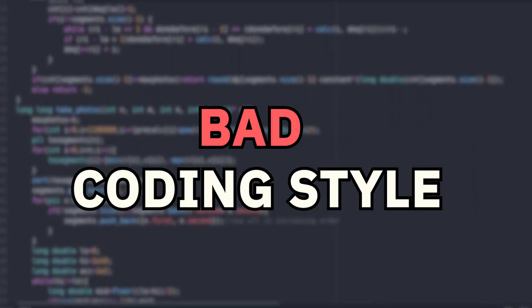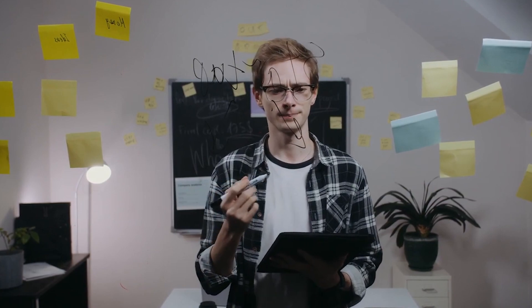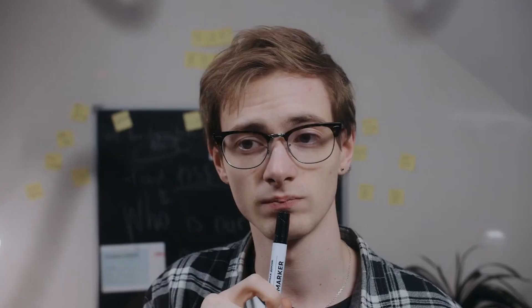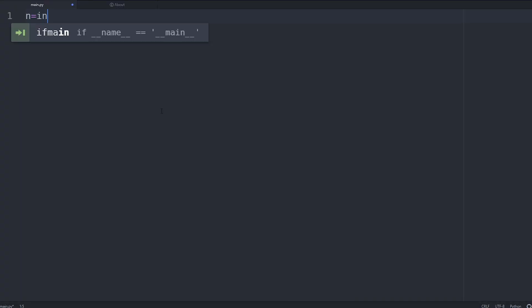At number 2, we have bad coding style. This shouldn't come as a surprise, but in case you forgot, we don't want the interviewer or our co-workers to guess what variables represent in the codebase. Try to refrain from using single-letter variables, not using methods to improve modularization, and not using spaces and proper indentation.